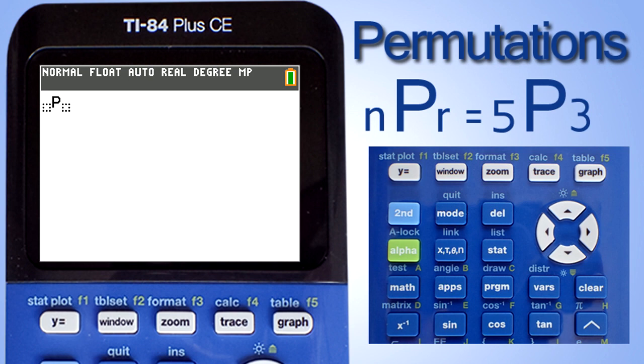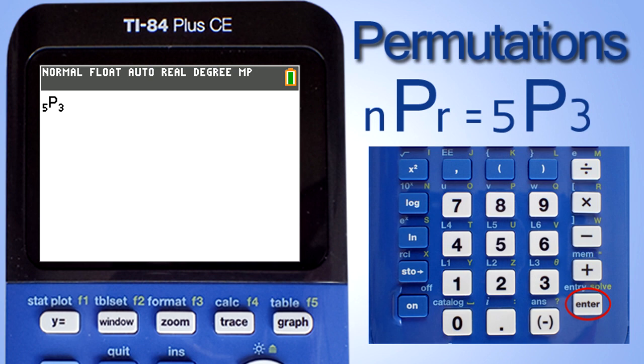Remember in our problem our n is equal to 5 and our r is equal to 3. Thus press 5 on the calculator. Now use the right arrow key to move over to the r variable spot and enter a 3. Now press the enter key for the calculator to determine the solution for this permutation.